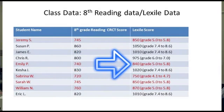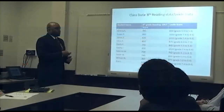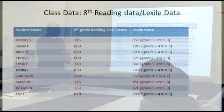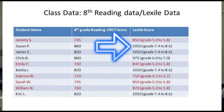Emily P. is performing at 740 on her reading CRCT, also reading at a fifth grade level. However, we have students performing at or above expectations. Susan P. has an 860 reading score and a 1050 Lexile, performing close to that eighth grade sixth month target of 1075.